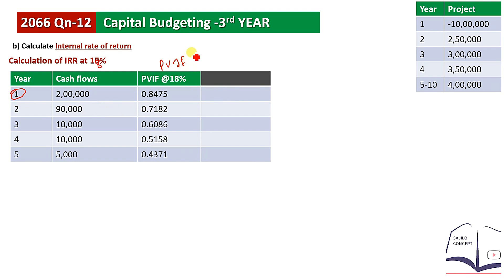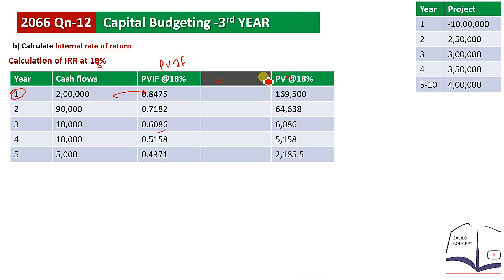At 18%, the individual PVIF factors are: Year 1 = 0.8475, Year 2 = 0.7182, Year 3 = 0.6086, Year 4 = 0.5158, Year 5 = 0.4371. Multiplying these by the respective cash flows gives discounted values. The results are approximately 64,638; 6,0086; 5,150; and the last value is 8,855.